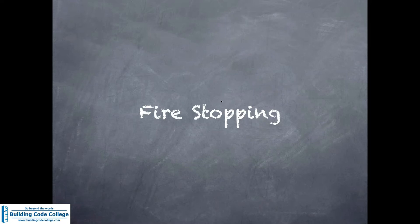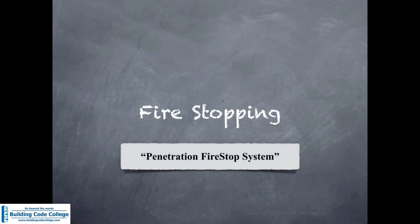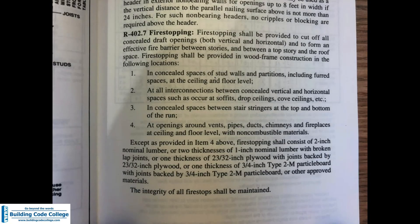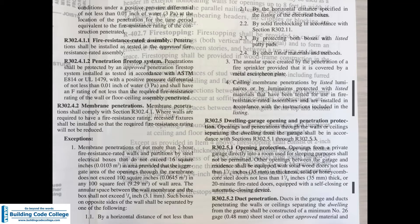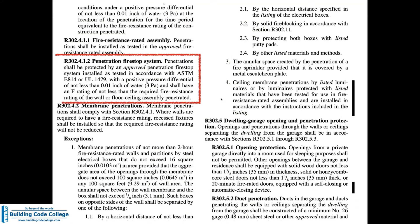Fire blocking is now what fire stopping used to be. So what's fire stopping today? In today's code it's called penetration fire stop systems — not just fire stopping. It is a tested and listed system that you install. Here's one of the last code books that used the term 'fire stopping' with a description that actually described fire blocking. And in the 2018 IRC you can see the section for penetration fire stop systems, which is completely, 100% totally different and unrelated to fire blocking.